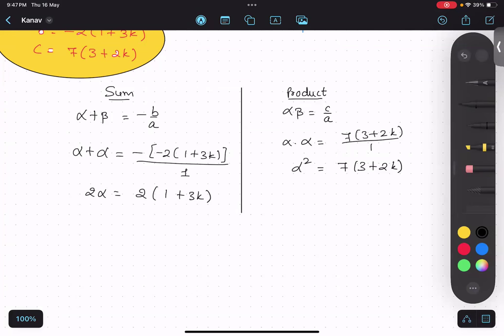No need of opening bracket as of now. I'm going to just cancel this 2 and 2 over here. So alpha value will become 1 plus 3k. I will just substitute this value over there.